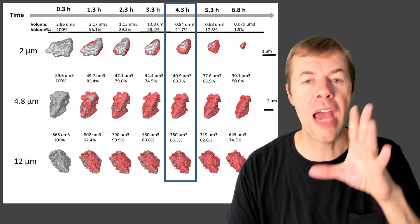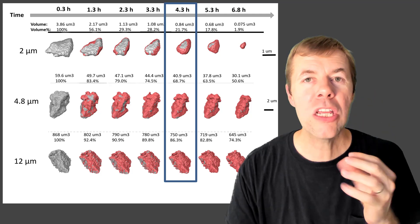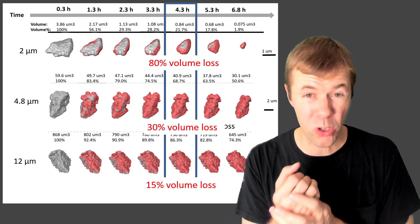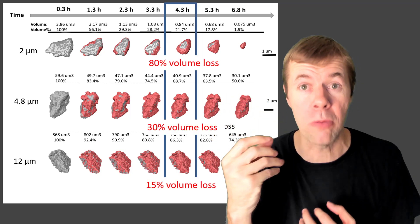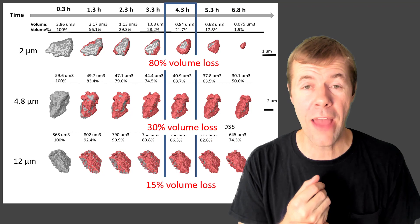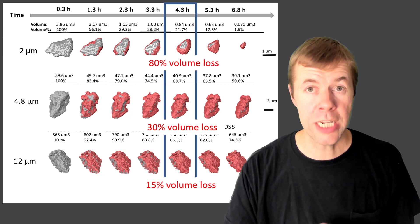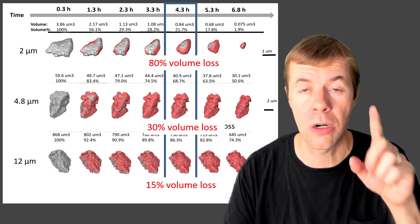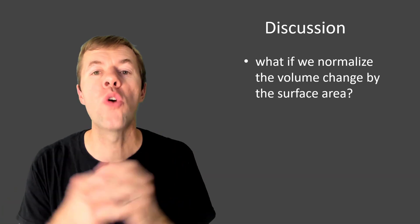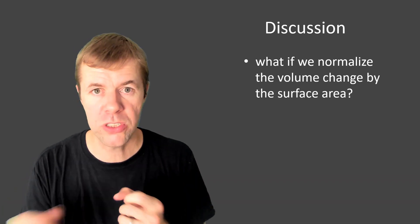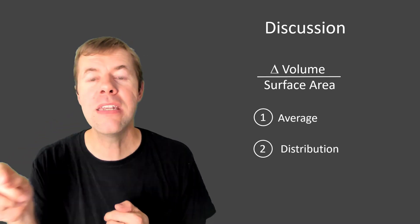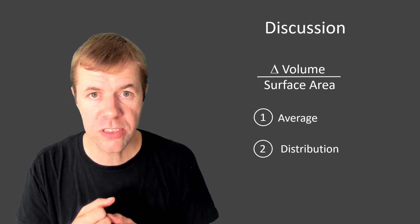But let's first look at this time period here. And you might think that if I look at just the volume change, this small particle has lost 80% of its volume. The medium about 30% and the large particle about 15%. You might think that the small particles are just reacting faster. Ha ha. What if we normalize this by the surface area? What if we take the change in volume and divide it by the surface area?